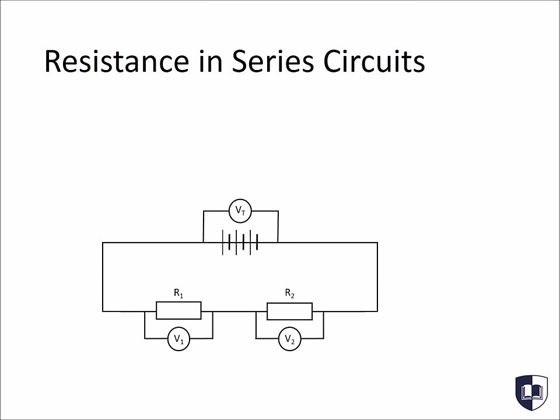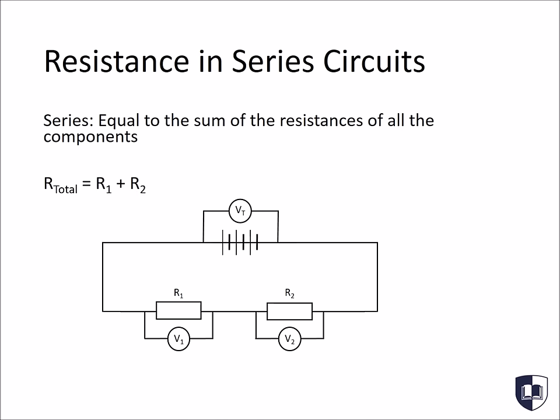Calculating the resistance of a series circuit is very straightforward. The total resistance is equal to the sum of the resistances of all the components. So, looking at this simple diagram, the total resistance would be R1 plus R2.